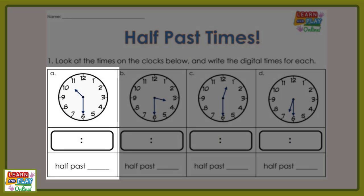Now we're going to look at question A. The minute hand is pointing to the 6, which means 30 minutes has passed the hour. The hour hand is past the 10. So the time is 10:30 or half past 10.